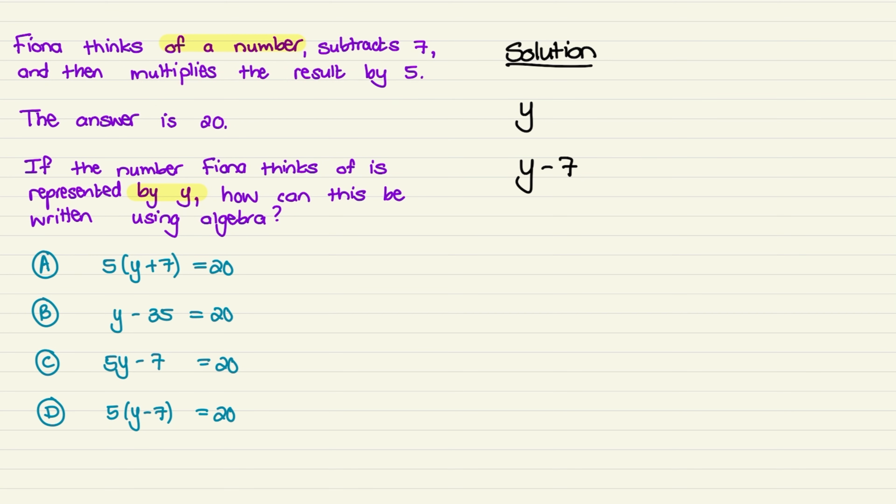Now, is she multiplying y by 5, or is she multiplying y minus 7 by 5? And the question says she's multiplying the result by 5. So we have 5 times y minus 7. The 5 next to the brackets shows multiplication. And here we have 5 times y minus 7.